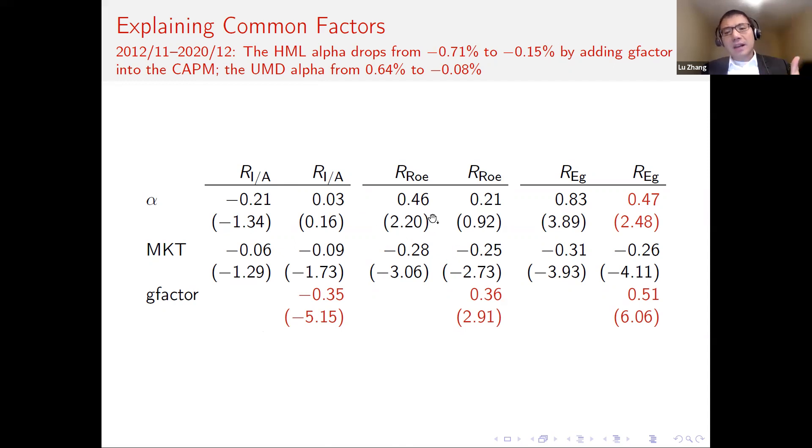So our ROE factor is holding up well, 46 basis points per month. Even within that short sample, adding the green factor reduces that by roughly 50% and becomes insignificant. Most important, our expected growth factor has been doing great, 83 basis points per month. Adding the green factor reduces the economic magnitude between 40 to 45% in terms of fraction of the magnitude. However, the alpha is 47 basis points per month and still remains quite reliable in terms of T value.